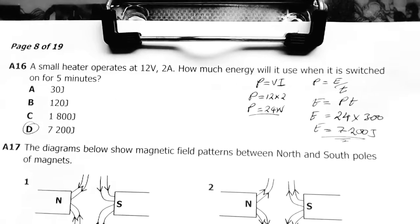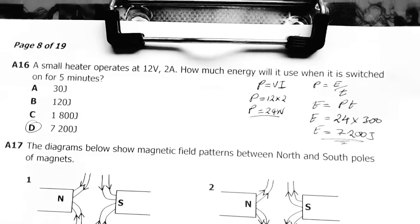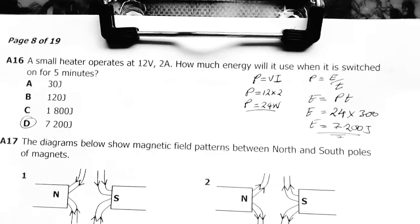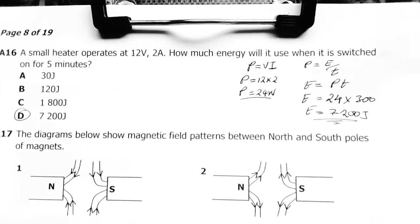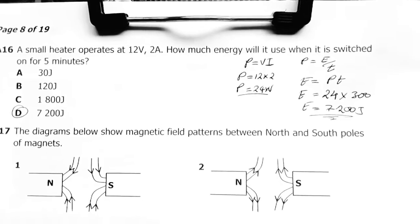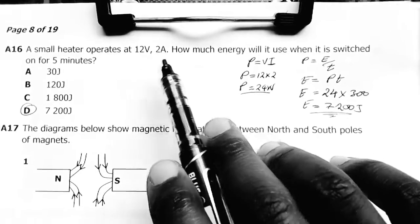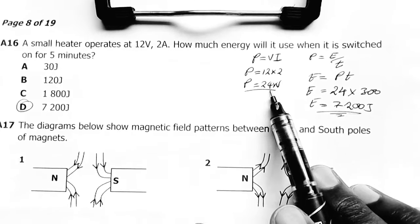Question 16: A small heater operates at 12 volts, 2 amps. How much energy will it use when it's switched on for 5 minutes? Energy equals power times time.